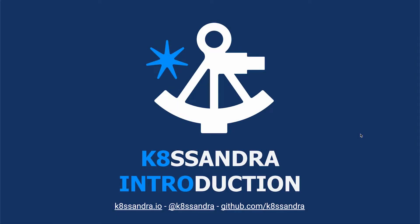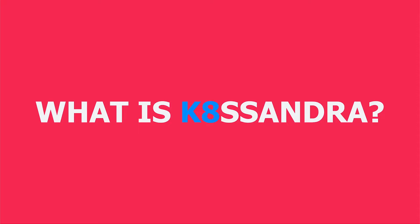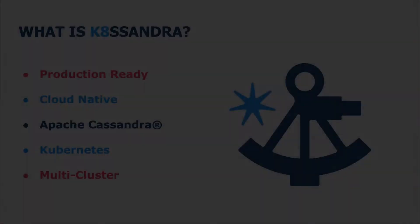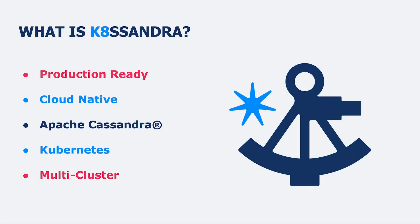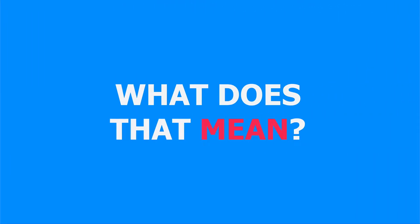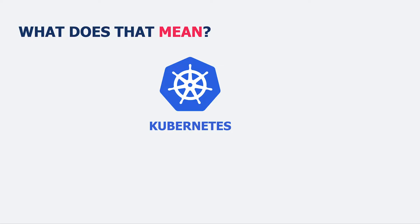Hello and welcome to the K8ssandra introduction. What is K8ssandra? K8ssandra is a production-ready, cloud-native Apache Cassandra distribution running on Kubernetes that's multi-cluster aware. At its core, we take Kubernetes — this is where we deploy our resources: pods, persistent volumes, and so on.